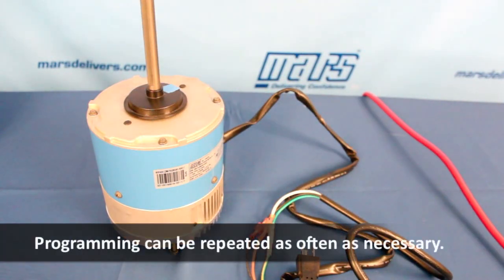The motor will stop. And now the motor is programmed for 825 counterclockwise rotation. And we can go ahead and install the motor.